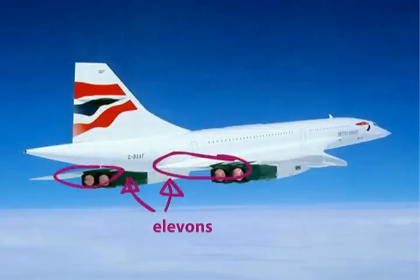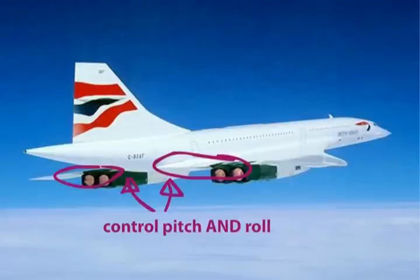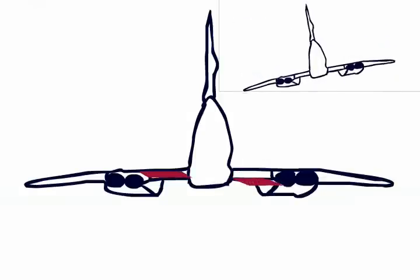It controls itself in pitch and roll using these elevons, which combine the functions of the elevator and the ailerons into one set of flight controls. They work by moving up and down together like an elevator for pitch control, or in opposite directions to control roll.